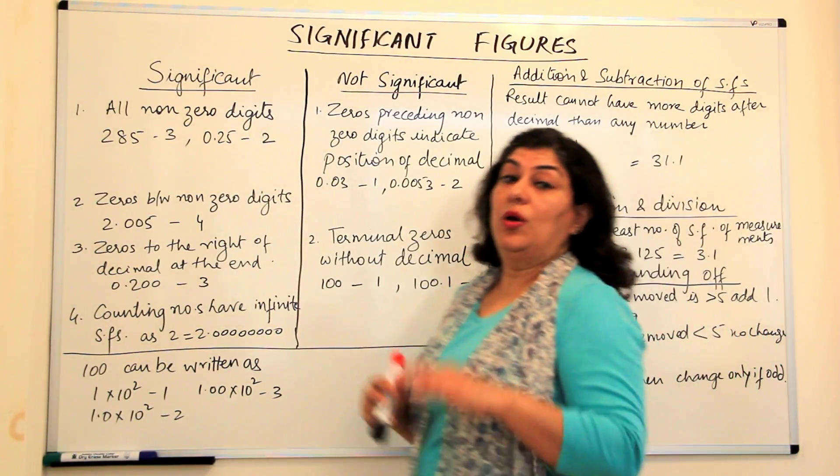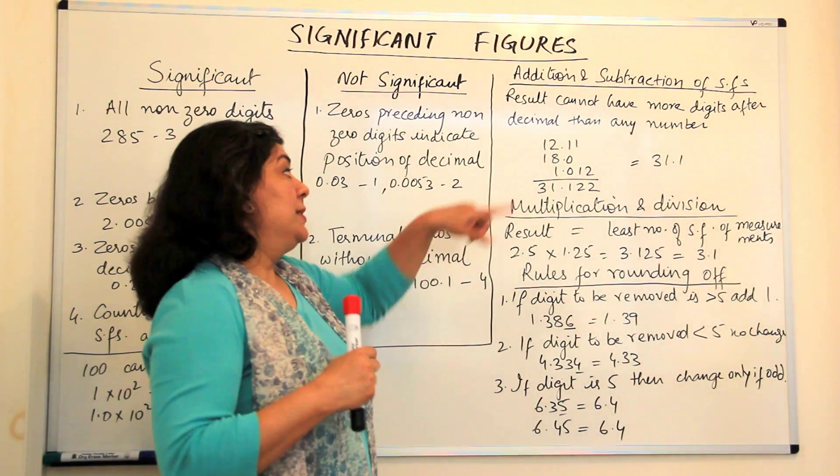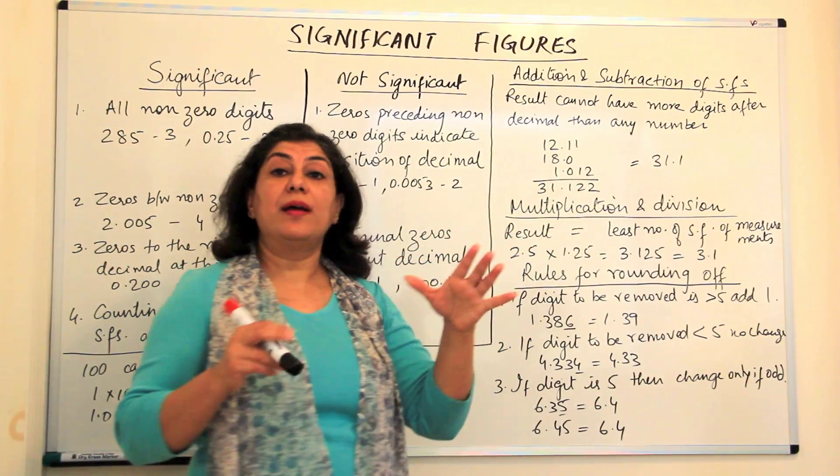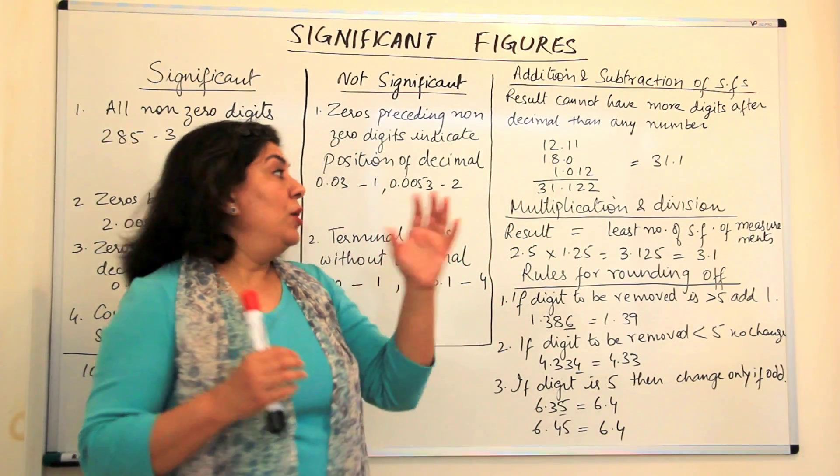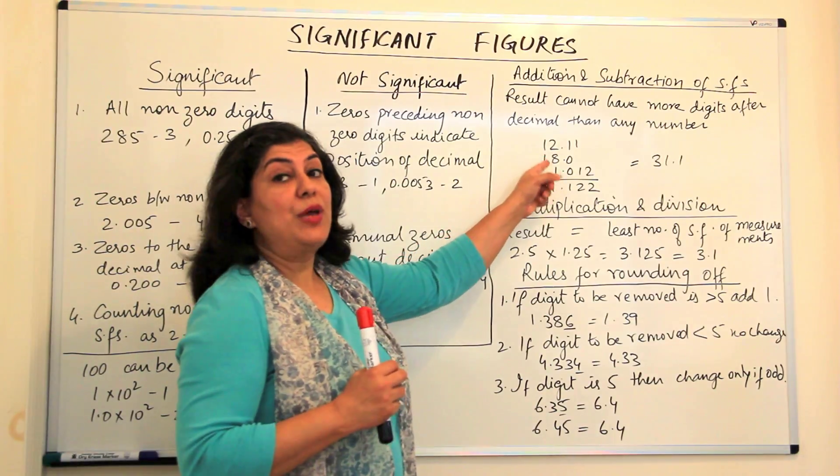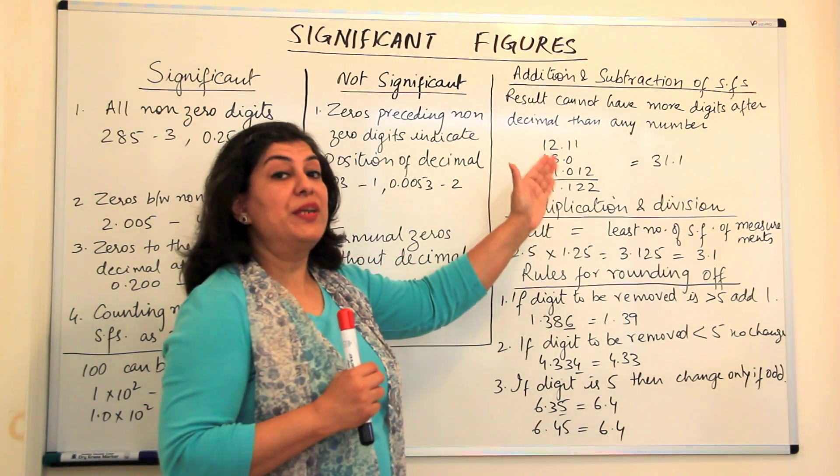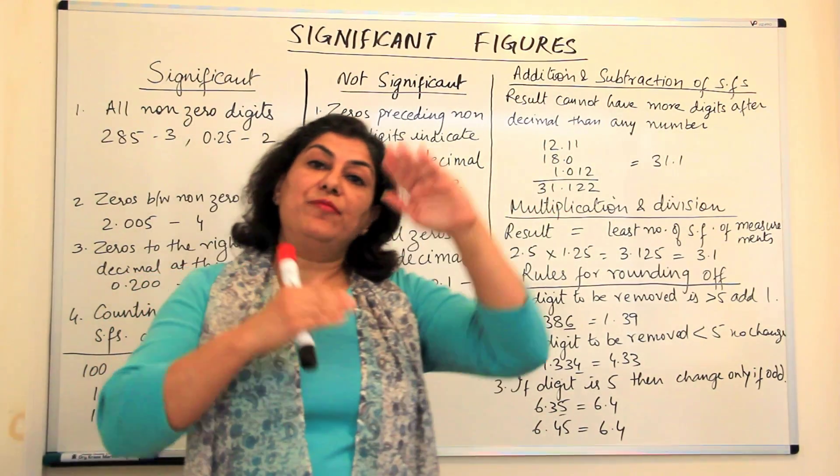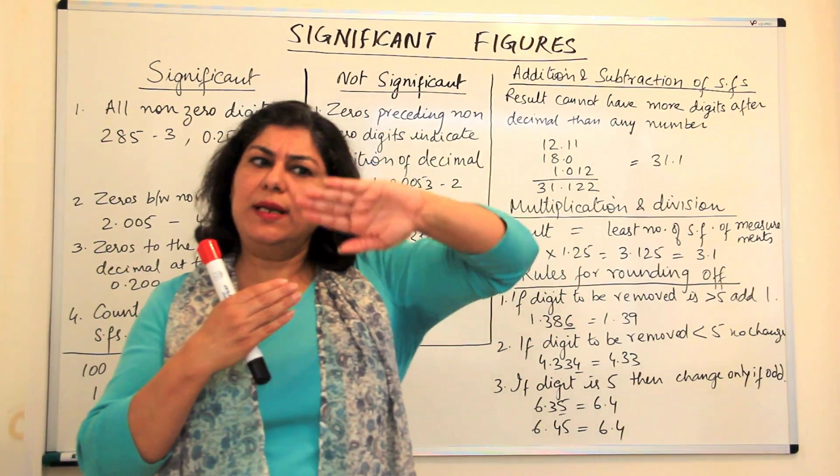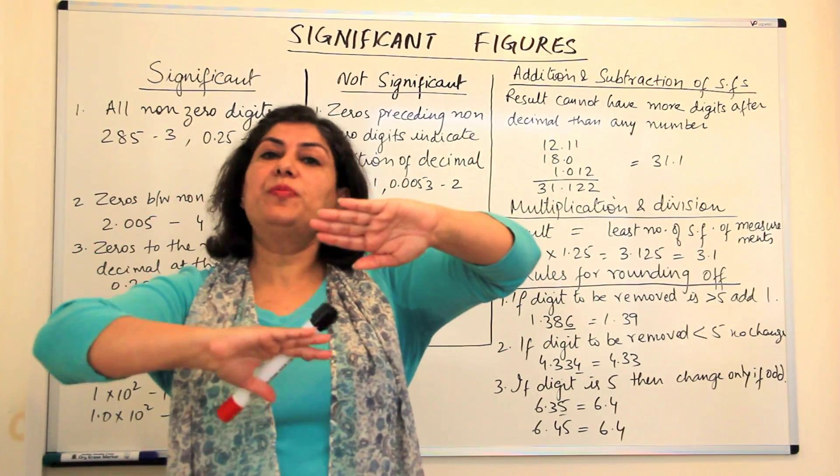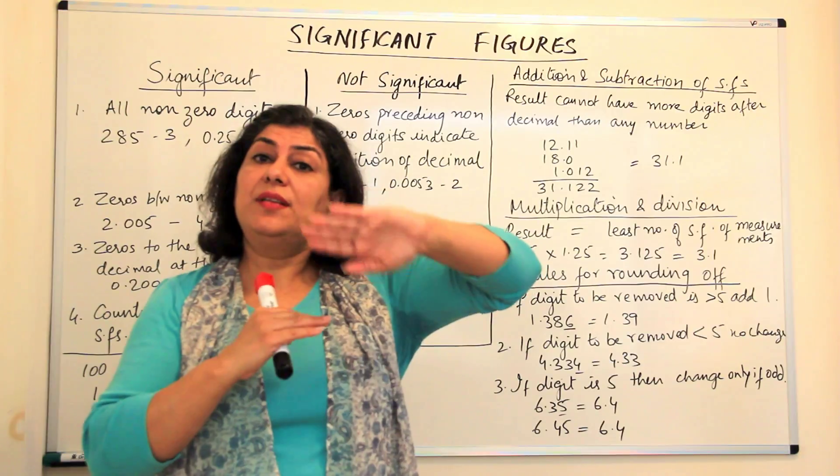which according to significant figures, I can only report my answer to that accuracy of, to that of the least accurate measurement. If I am finding the sum of measurements, one is less accurate and the others may be more accurate, but this one,